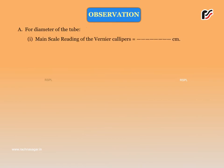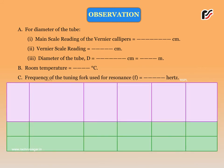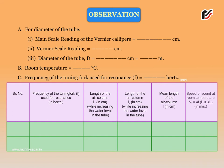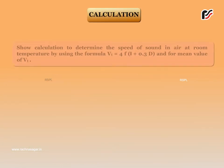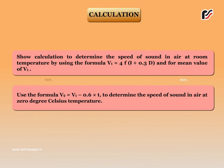Record your observations and do calculations as follows. Determine the speed of sound in air at room temperature using the formula: VT equals 4F times (L plus 0.3D). For the mean value of VT, use the formula V₀ equals VT minus 0.6 times T to determine the speed of sound in air at 0 degrees Celsius temperature.